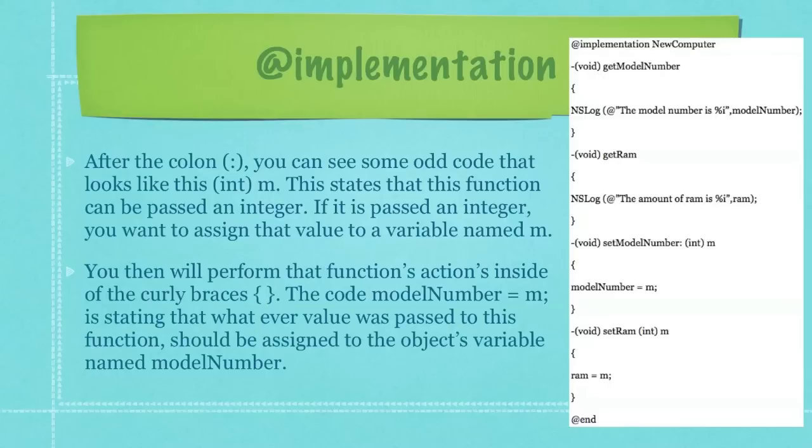you can see something that might look odd to you in that I have the characters int surrounded by two brackets and then followed by the letter m. This states that this function can be passed an integer. And what you're saying here is if it is passed an integer, you want to assign that value to a variable named m.